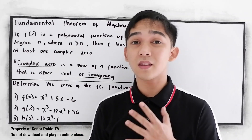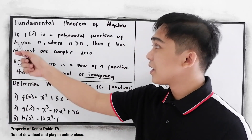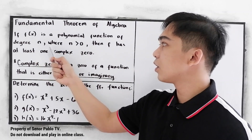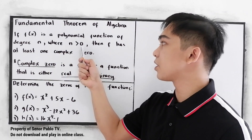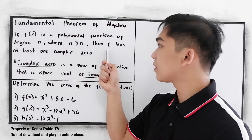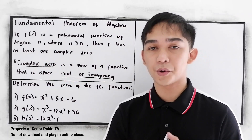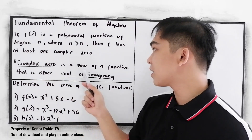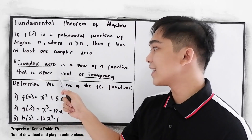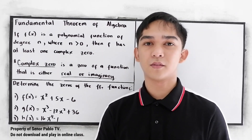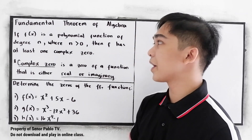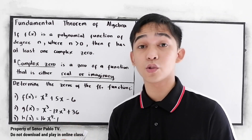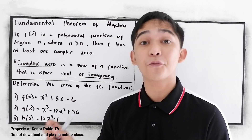So what is the Fundamental Theorem of Algebra? If f of x is a polynomial function of degree n, where n is greater than 0, then f has at least one complex zero. Note that a complex zero is a zero of a function that is either real or imaginary. So in this theorem, we're going to use this to determine how many zeros we have in the given function.